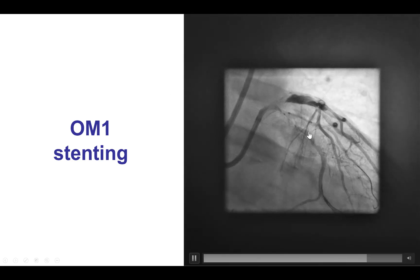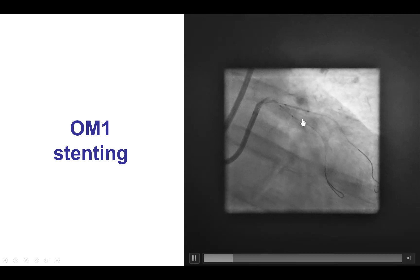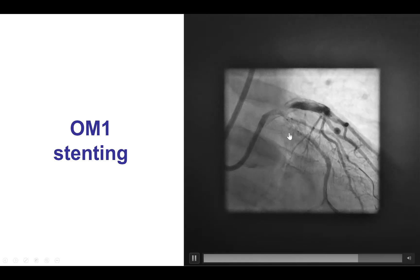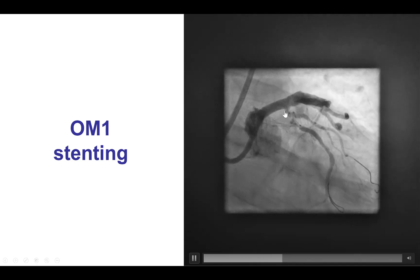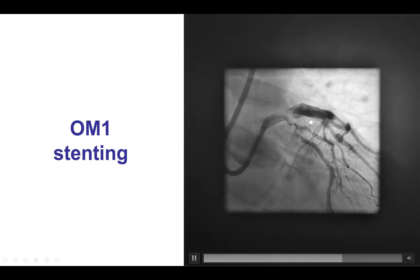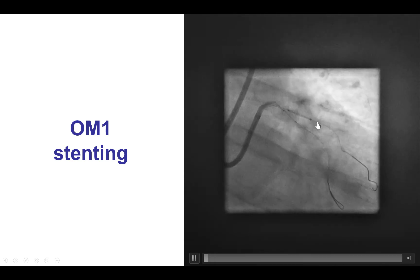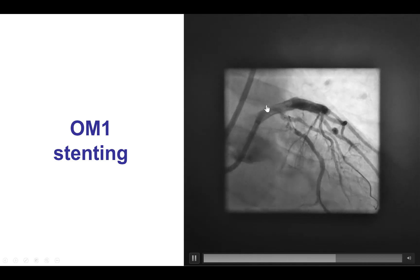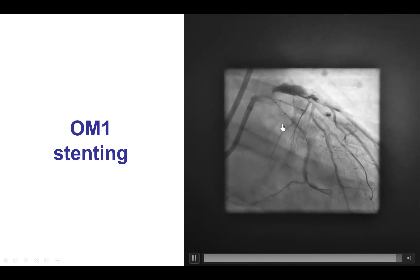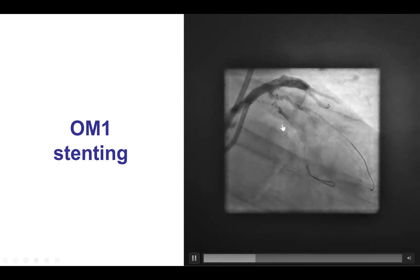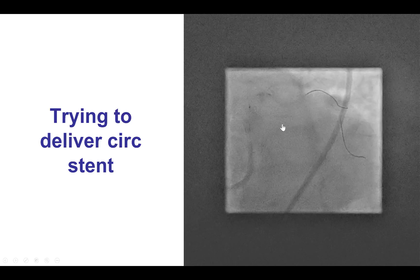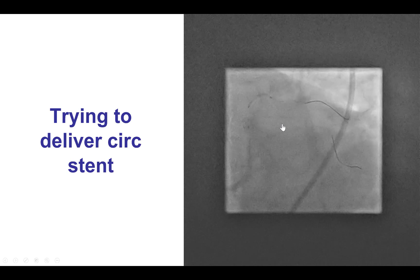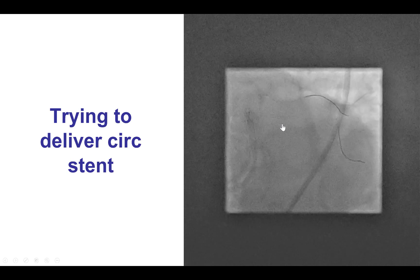This is the stent into the obtuse marginal branch. We did have a balloon into the main vessel in the circumflex, in case the OM stent went further back than anticipated. But actually, we were fortunate in that the stent did not move.